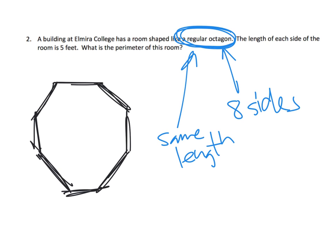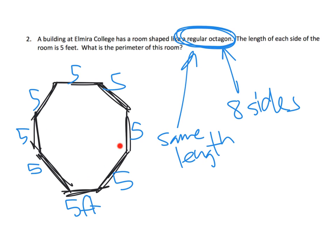If we wanted to, we could try and draw it — one, two, three, four, five, six, seven, eight — there is my eight-sided figure. That's a horrible-looking eight-sided figure, but we know that each length is supposed to be five feet: five, five, five, five, five, five, five, and five. That's enough information for our students to find the perimeter.